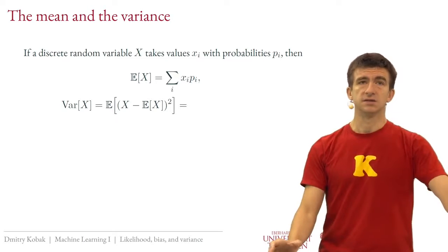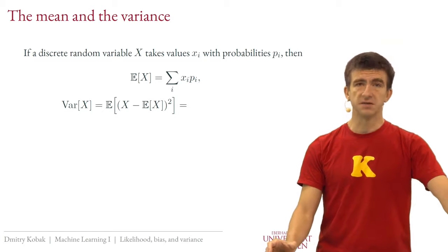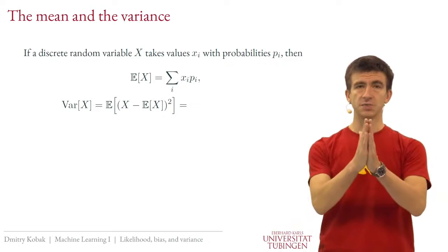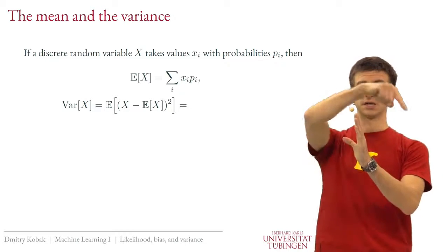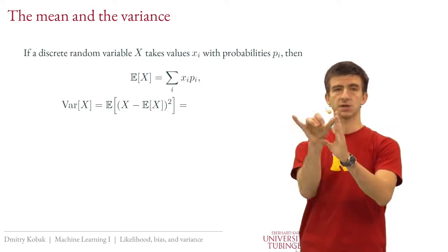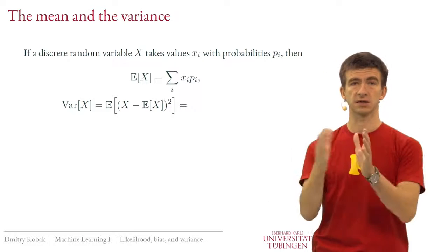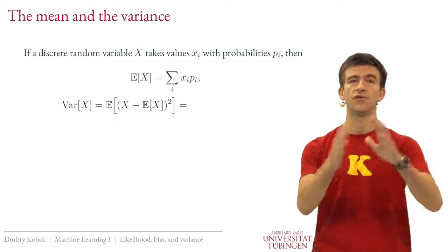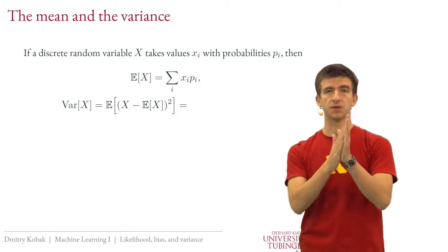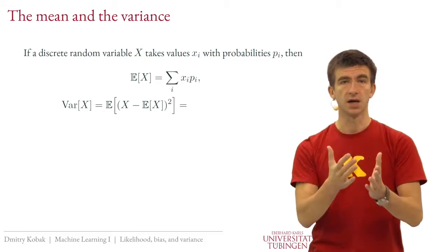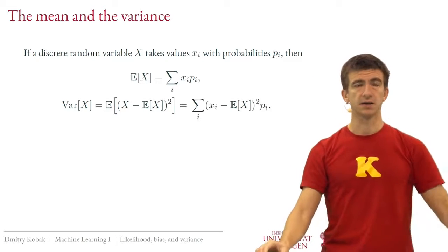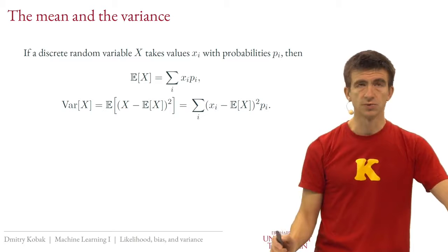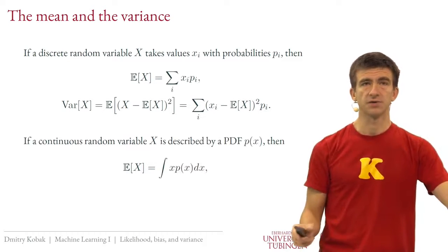The variance is slightly more complicated. It's the expected value of the squared deviation from the expected value. You look at the squared deviations — squaring ensures the result is always positive — and compute the expected value of that. Variance measures how far away from the mean the values of the random variable typically are on average. For a discrete random variable, you sum over all possible outcomes to obtain the variance.